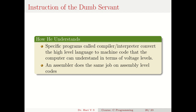Specific programs called compilers or interpreters convert high-level language to machine code that the computer can understand in terms of voltage levels. Humans understand somewhat English-like text, so we have programming languages like C or Python in which we generate the computer program — the instruction to be given to the computer. Between the human and the computer there is a compiler or interpreter that takes the high-level language and converts it into machine code the computer can understand. For assembly-level coding there is a program called an assembler, but here we focus on compilers and interpreters.